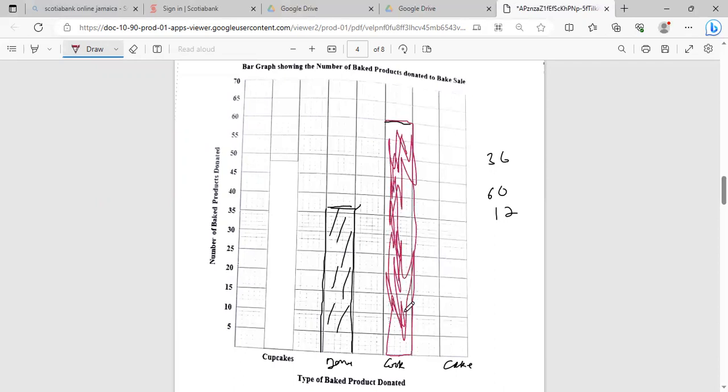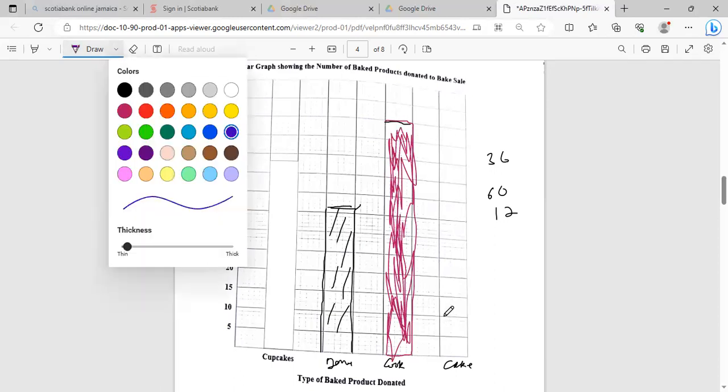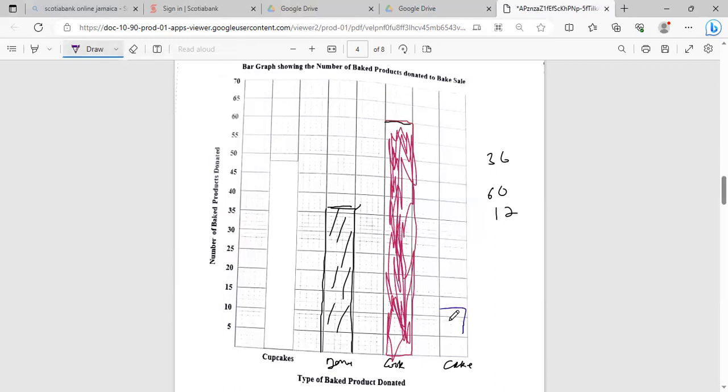Next we have 60, so 60 goes all the way up. I'm just gonna color code it so it makes sense. This one is 60, and this is the cupcake. Of course you guys should have done it neat. And next we have the cake which is only 12. So we have 5, 10, 11, 12, right about here.